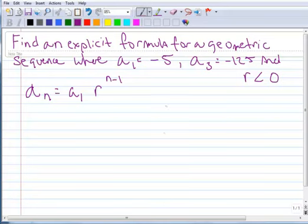So I can make two points out of this. So I have the ordered pair, well, if the first term, that means the x-coordinate is 1, and the first term is negative 5, so that means the y-coordinate is negative 5.